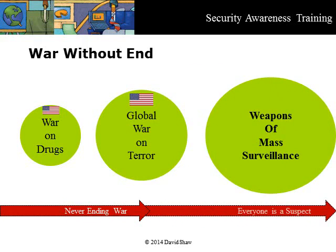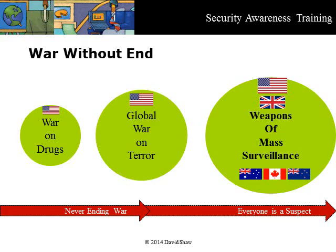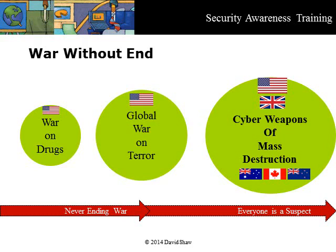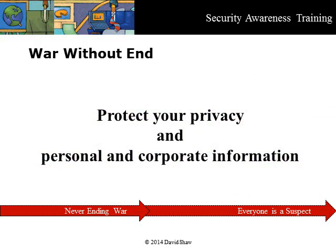This mass surveillance is coordinated by military intelligence in five English-speaking nations, the so-called Five Eyes. The techniques used by the Five Eyes are staggering in their scope and have become called weapons of mass destruction. Operating outside democratic control, they are designed to disrupt industries, destabilize societies, and control or ruin individuals. That is why it is so important to understand that you are an innocent target and why you must actively protect your privacy and personal and corporate information.